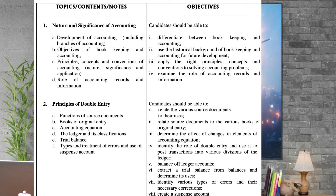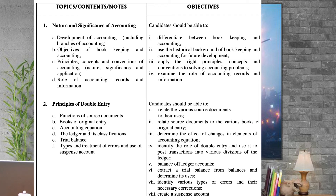Ethics of accounting is something you should cover too. Then cash book, bank transactions and reconciliation statements, instruments of bank transactions, the final accounts of sole trader, stock valuation, control accounts and self-balancing ledgers.